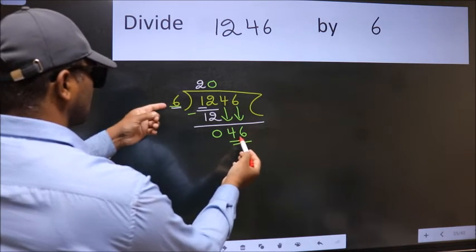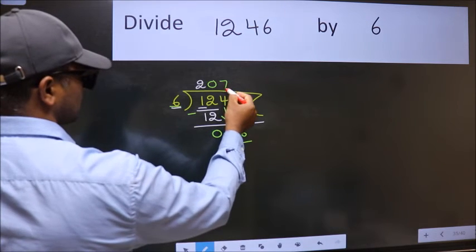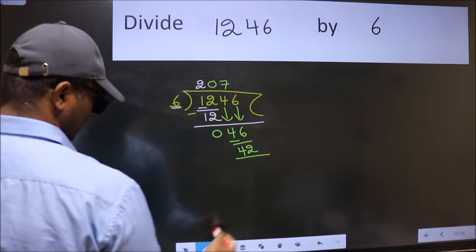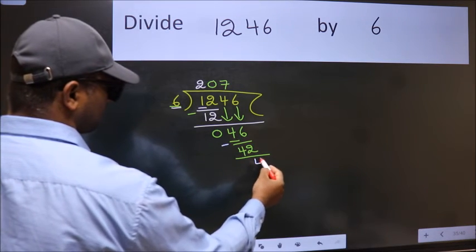A number close to 46 in 6 table is 6 7s, 42. Now we subtract. We get 4.